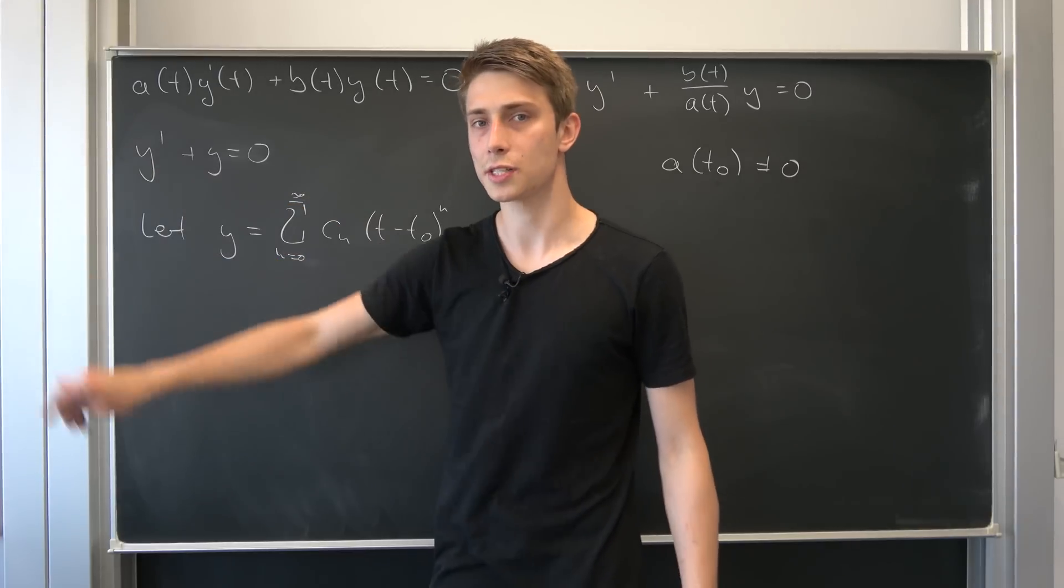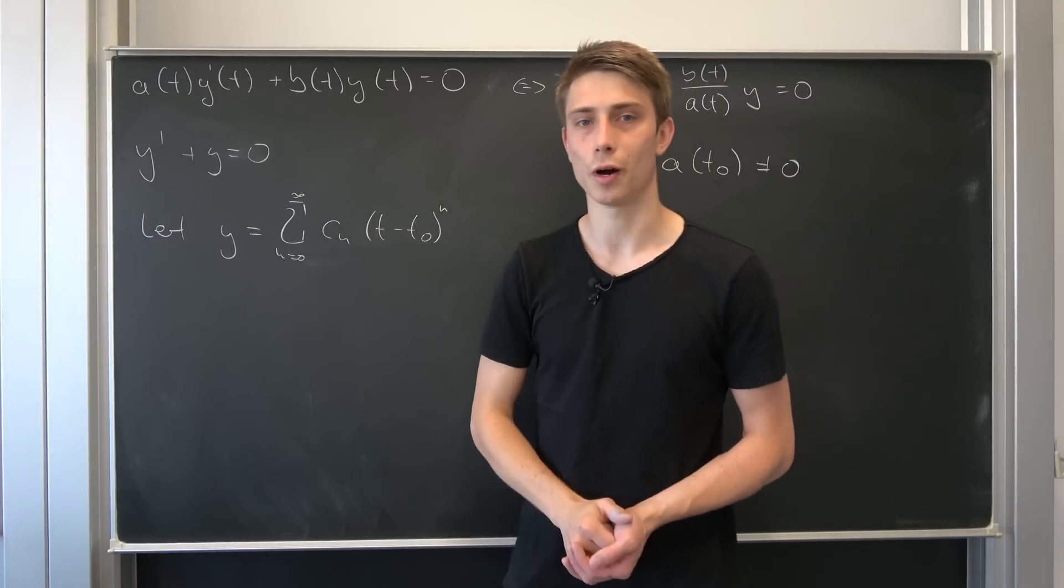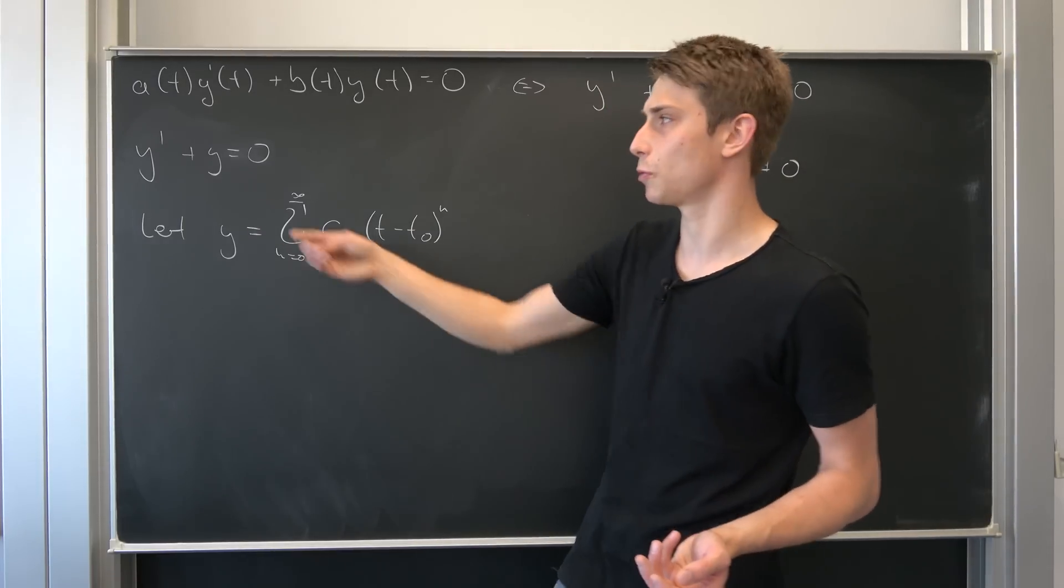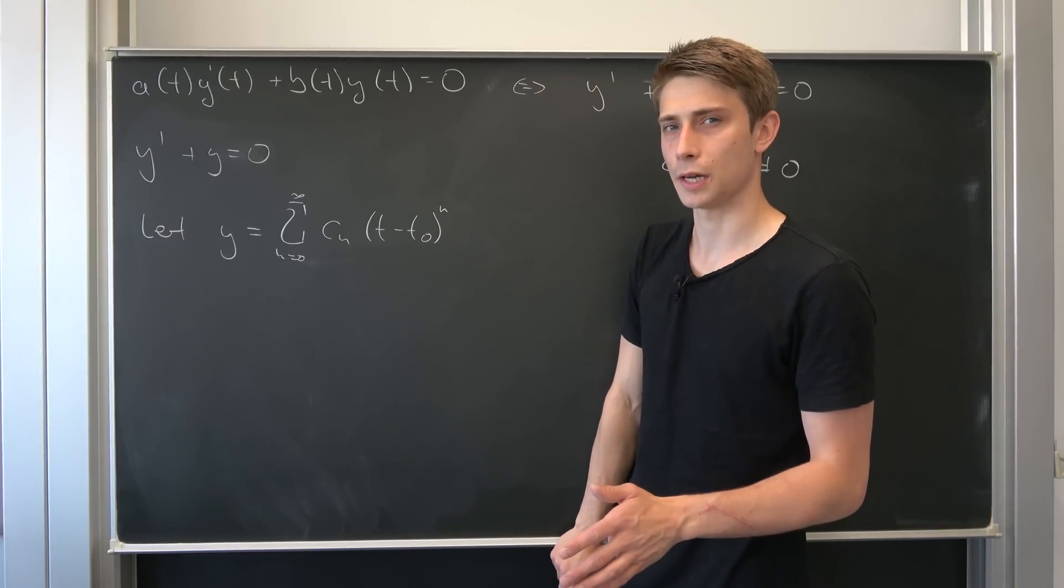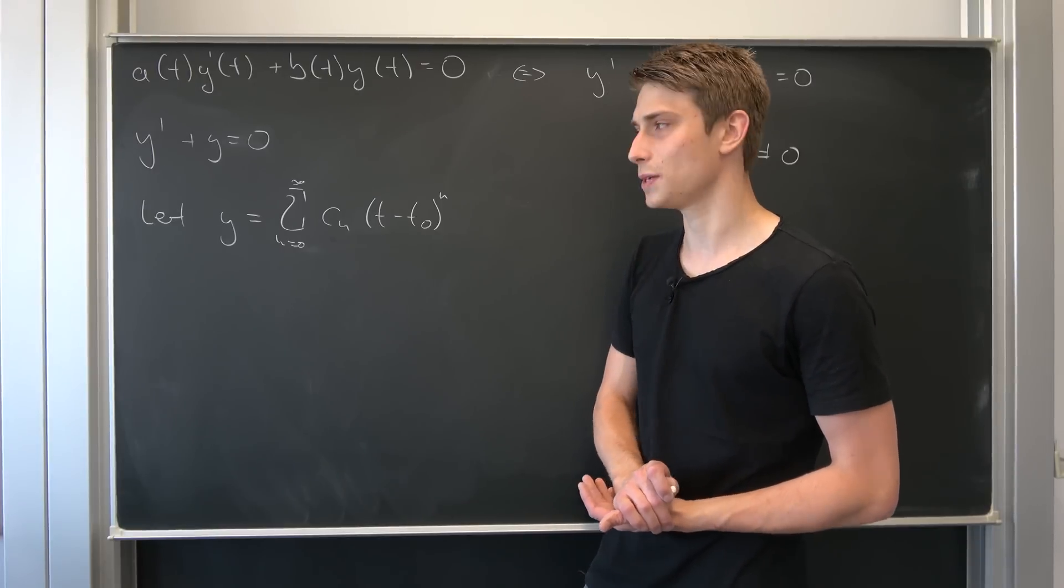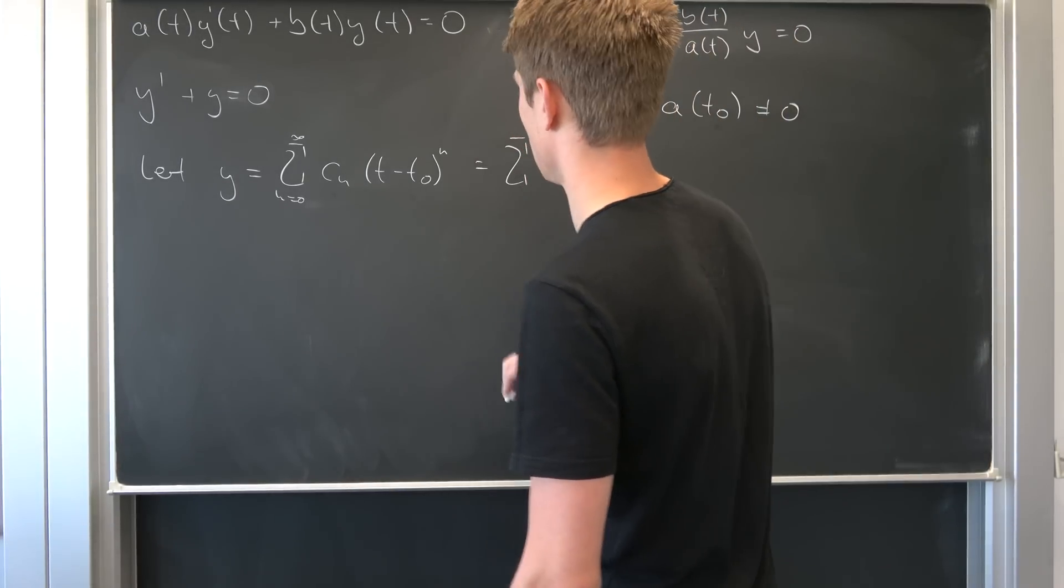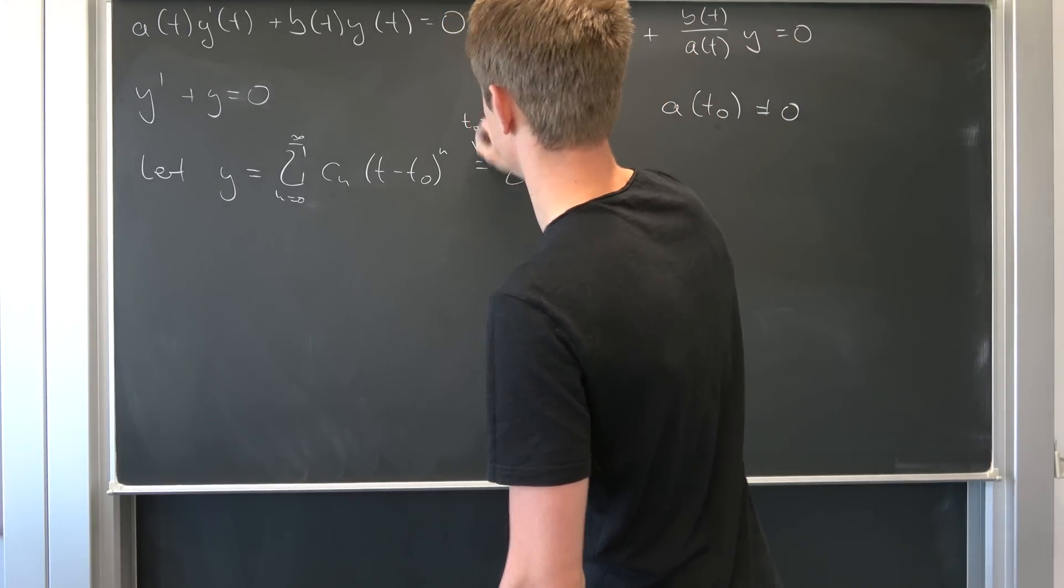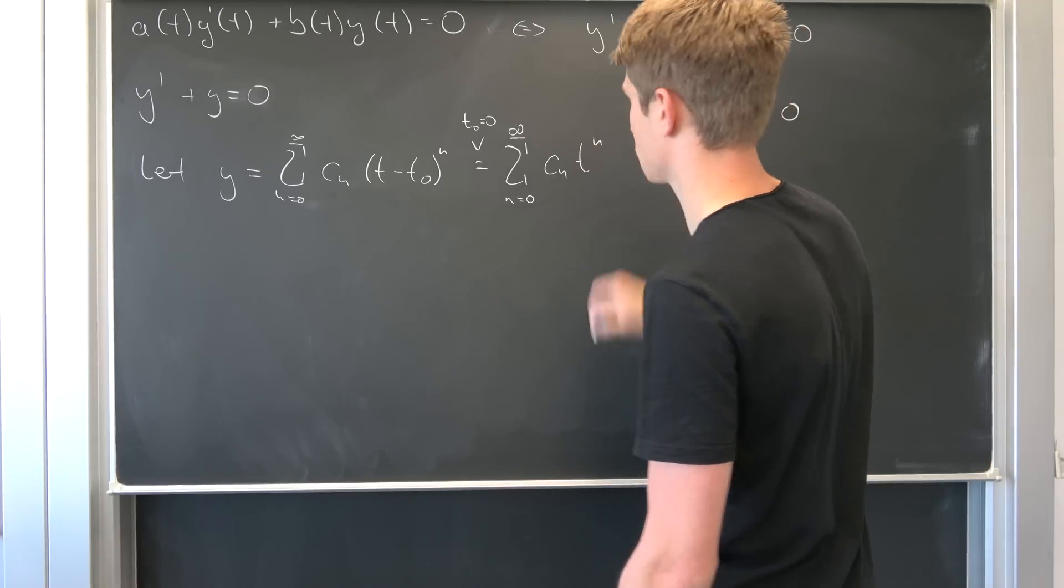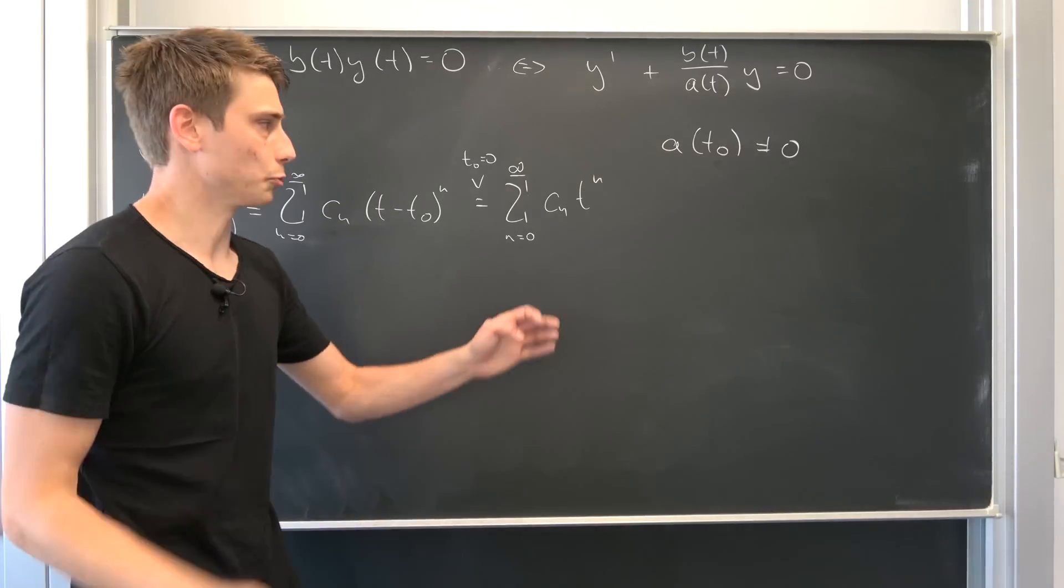And there's one little condition we want to hold for us to do Taylor series representation. We want this coefficient b over a to be analytical—that just means it's complex differentiable. We don't want a(t0) to be equal to 0. Is this condition satisfied? Well, it is. Because a(t) is just 1, a constant function, and b is also just 1. That means if we plug every point t0 into this constant function, we just end up with 1. So why not choose t0 as 0? That makes things easier.